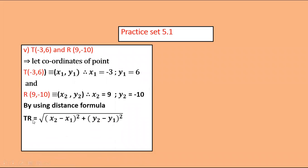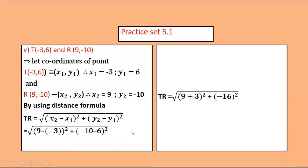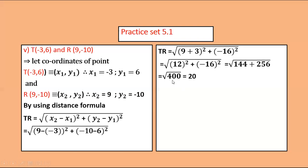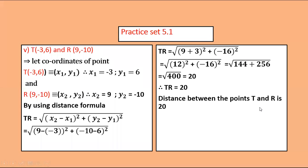Substitute the values: TR = √[(9−(−3))² + (−10−6)²] = √[(12)² + (−16)²] = √[144 + 256] = √400 = 20. Therefore TR = 20. Hence, distance between points T and R is 20.